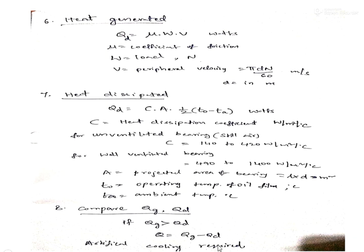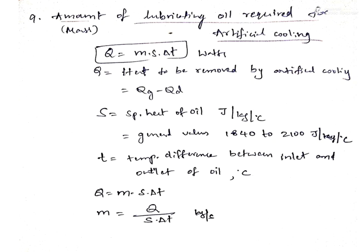If heat generated exceeds heat dissipated, artificial cooling is required. The mass of lubricating oil needed for artificial cooling is found from: Q = m × S × ΔT, where m is the mass flow rate of oil (kg/s), Q is the excess heat (Q_generated − Q_dissipated), S is the specific heat of the oil in J/kg°C (given in the question or taken from standard ranges), and ΔT is the temperature difference between oil inlet and outlet temperatures.